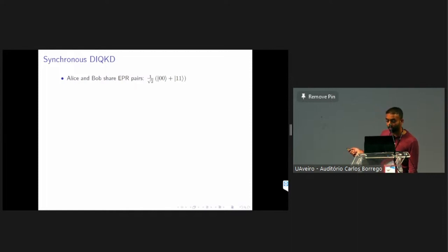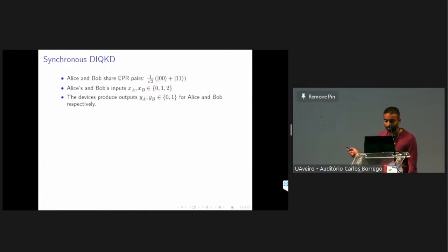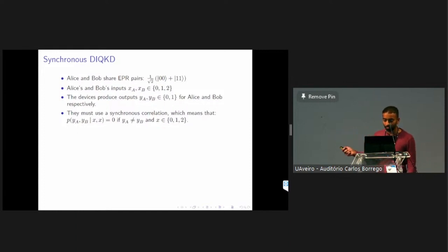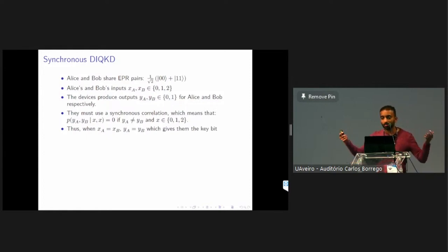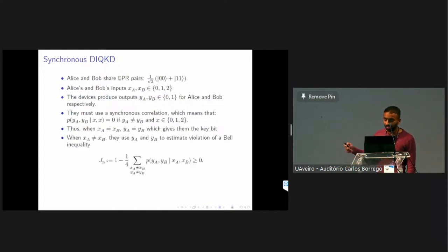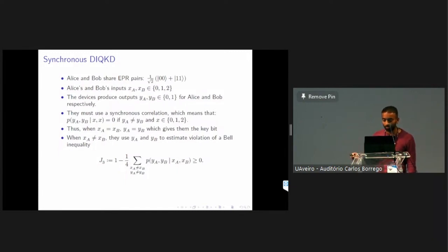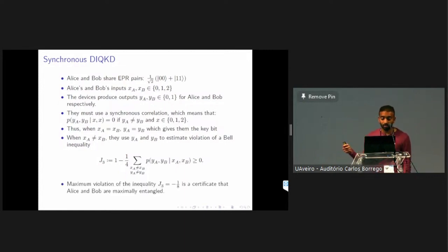Here is the synchronous DIQKD protocol. Alice and Bob start with EPR pairs and draw inputs from the set {0, 1, 2}. They produce outputs using a synchronous correlation, so the probability of generating different outputs given the same inputs is zero. Because they're synchronous, if they get the same inputs they must produce the same outputs, which gives them the key bit. In the case of different inputs, they test the violation of the Bell inequality. We use J3, which equals one minus one-fourth of the sum over all different inputs and different outputs of the probability of those outputs given those inputs. Classically this is always non-negative, but quantumly a violation of negative one-eighth certifies that Alice and Bob share a maximally entangled state.